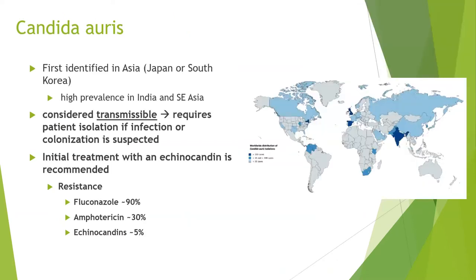Candida auris is an important emerging pathogen first identified in Asia with high prevalence in India and Southeast Asia. It is considered transmissible: colonized patients require isolation and infection prevention notification, as it has caused widespread outbreaks in hospitals and long-term care facilities. About 90% of isolates are resistant to fluconazole, 30% to amphotericin, and about 5% to echinocandins, making echinocandins the first-line treatment. About 4-5% of isolates are pan-resistant, associated with devastating infections.